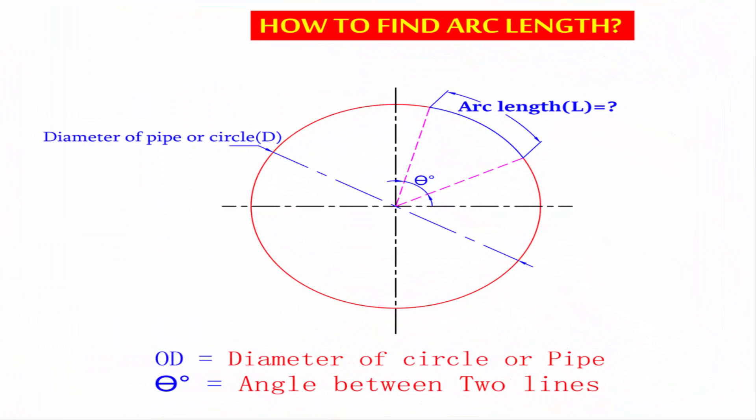To find the arc length of a circle, we need the OD (outside diameter of circle) and theta (degree of arc). From these two values, we can find the arc length of the circle.